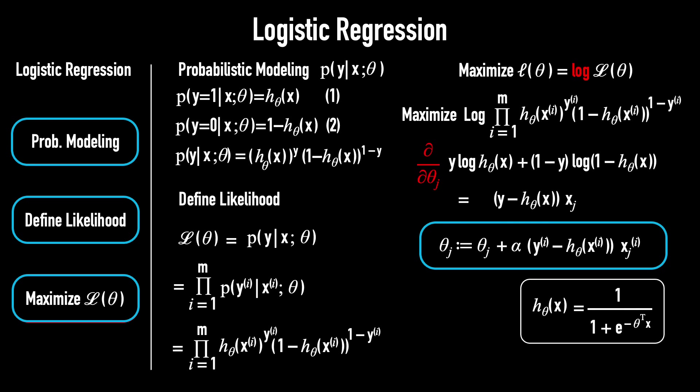So, what do we have here? This update rule looks the same as the one we found for linear regression. However, they're actually different. The difference lies in this hypothesis. This is the linear learning model. And this is the logistic learning model.